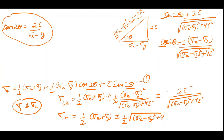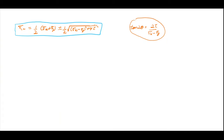In conclusion: sigma1 and sigma2 are the principal stresses, where sigma1 is the major principal stress and sigma2 is the minor principal stress. Their values are given by the equation: sigma1,2 = (1/2)(Sigma X + Sigma Y) ± (1/2) sqrt[(Sigma X − Sigma Y)² + 4 tau²]. The position of the principal planes is given by tan 2theta = 2 tau / (Sigma X − Sigma Y). These are the two important equations about principal planes.